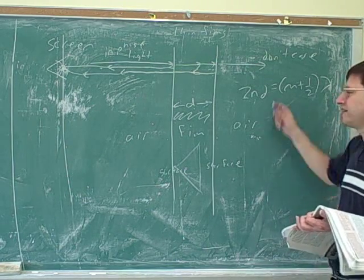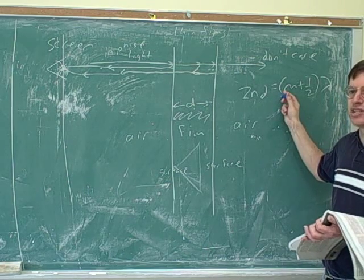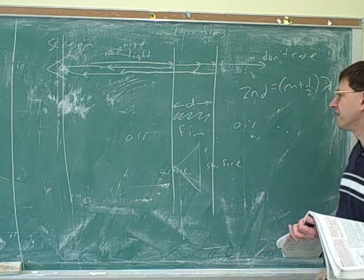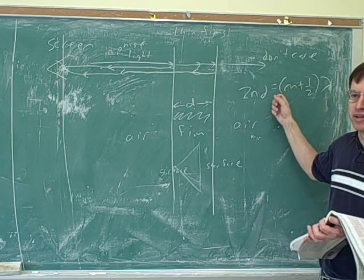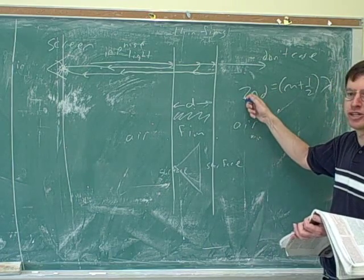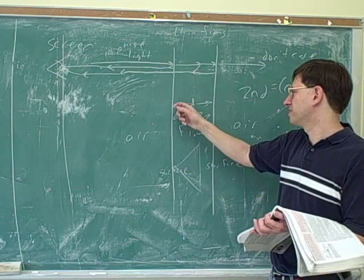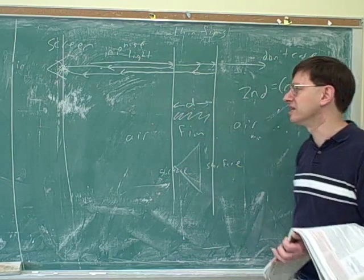Now, it turns out this is not an obvious formula. Again, there's some complications that we didn't talk through here. The book works this out. But you wouldn't be expected to derive this formula. I just want to point out, we know where the number 2 is coming from. The number 2 is coming from because the path length difference depends on 2d, not just on d.